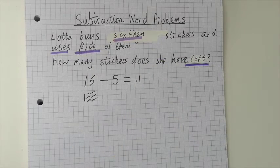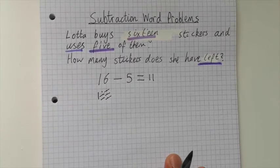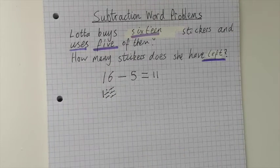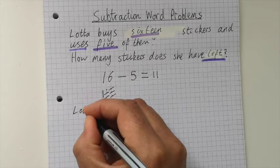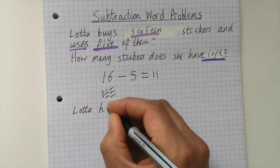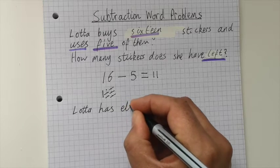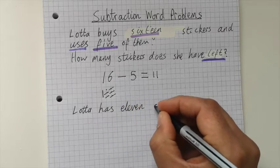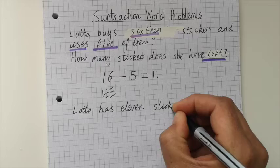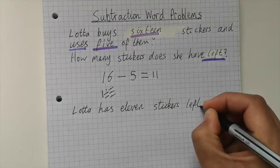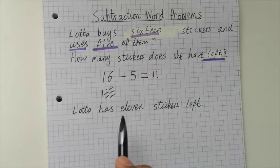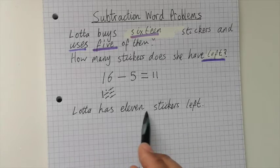When you're solving word problems, there's one little extra step we need to do, which is to write your answer in a sentence. So I'm going to say 'Lotta has 11 stickers left.' And because I'm writing words, I haven't written the number 11 - I've written the spelling: eleven.